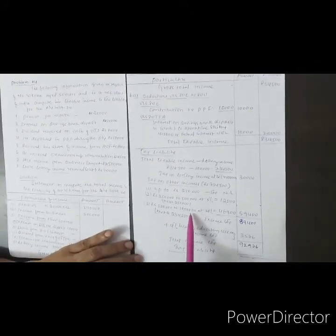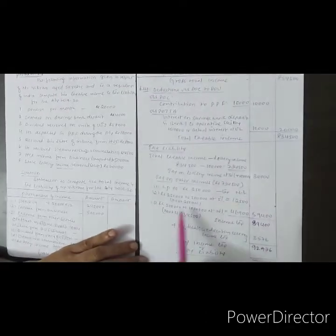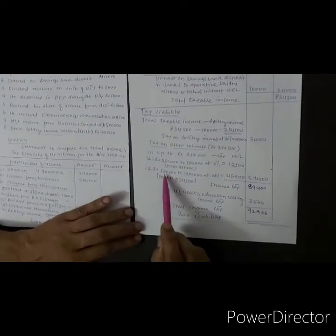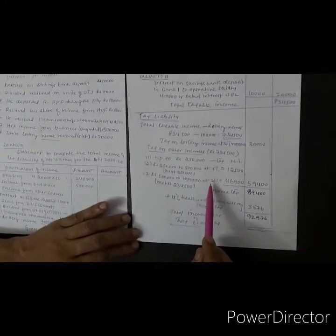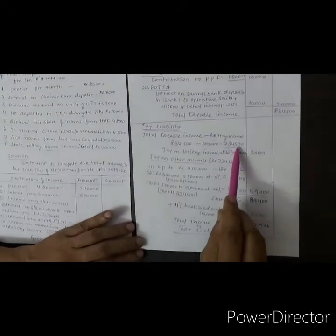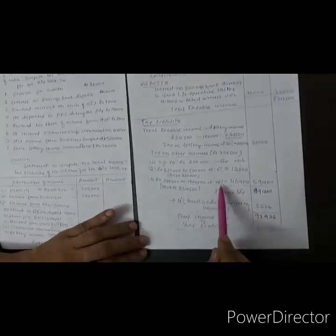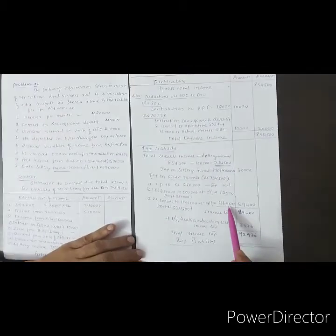From 5 lakhs to 7 lakh 34,500, the difference is 2 lakh 34,500 rupees. This amount is taxed at 20 percent, which equals 46,900 rupees. Total tax on other income is 12,500 plus 46,900 equals 59,400 rupees.